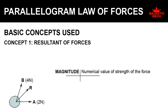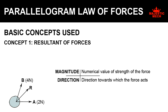The magnitude of a force is the numerical value of the strength of the force. So in this example, the magnitude of force A is two newtons. The direction of a force is the direction towards which the force is acting. In this example, the direction of force A is the direction indicated by the arrow mark.